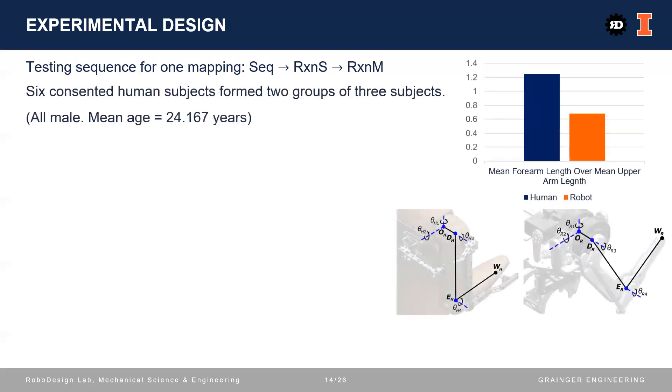We recruited six consented human subjects to form two comparison groups of three subjects. All the subjects were male, and the mean age was about 24 years. Another thing to pay attention to is that all subjects have their forearms longer than their upper arms, while the robot has its forearms shorter than its upper arm. So the subjects and robot have different link length ratios.